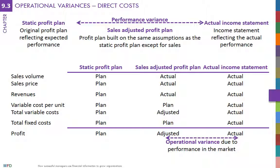Direct costs are either variable or fixed. For variable costs, two operational variances are estimated. The efficiency variance is related to how efficient resources were used, whereas the spending variance corresponds to the prices paid for the inputs.